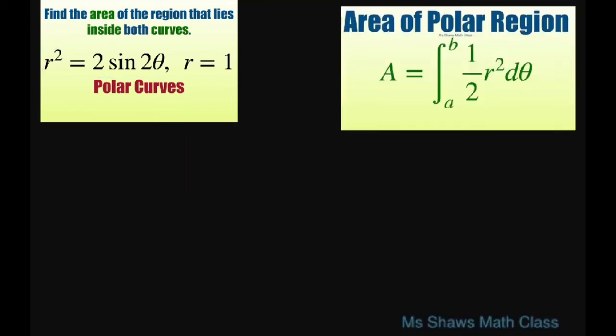We're going to take the area, and this is going to be, we're going to multiply everything by 4 because we have four pieces there. This is going to be the integral from 0 to π/12 of 1/2 times 2 sin 2θ because this is already r squared. So we don't have to square it. So that's going to be dθ.